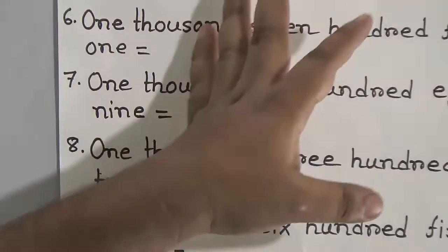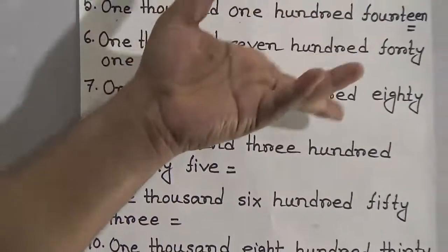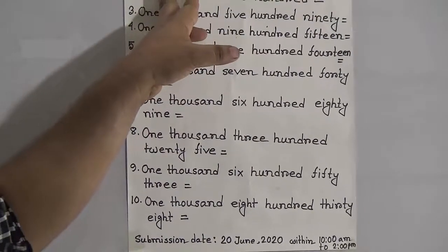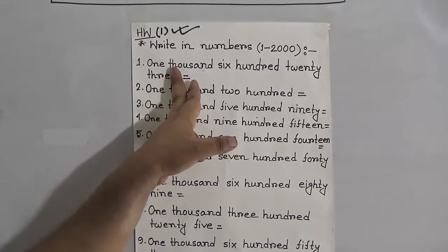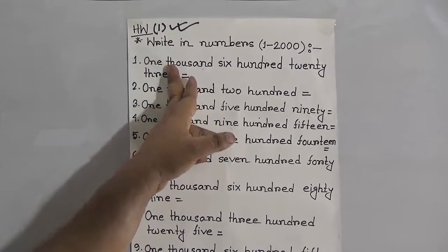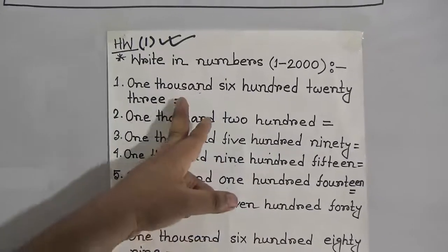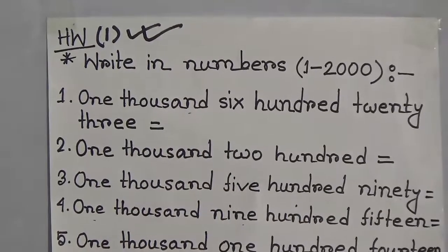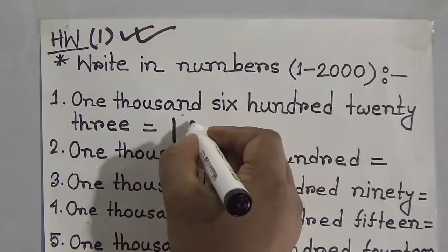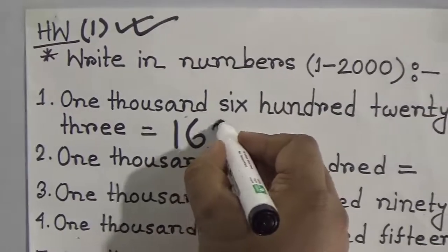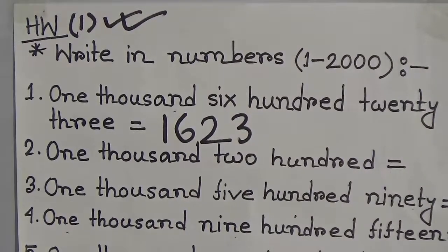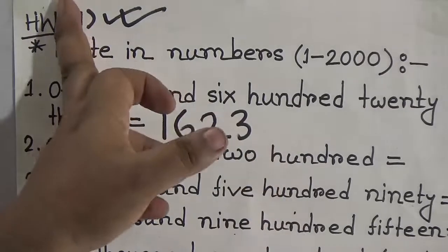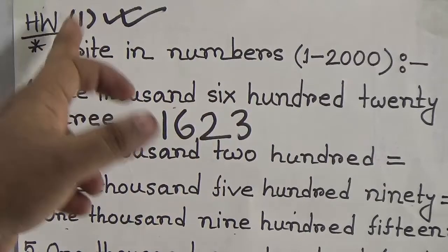Students, at first pick up the questions in your SW copy, then write the answer. Just like 1,623 — at first write this in your SW copy, then give the equal sign, and after that write 1,623. I hope you understood how to write SW in your SW copy. This is your first SW.